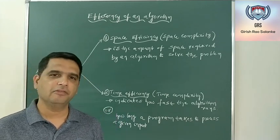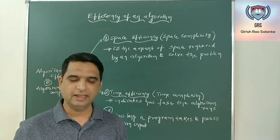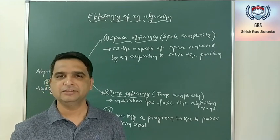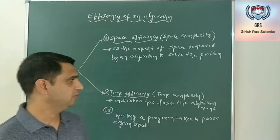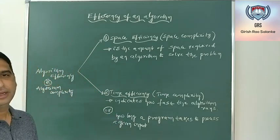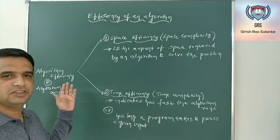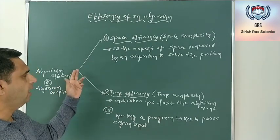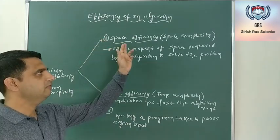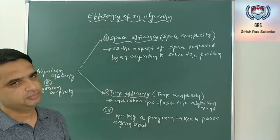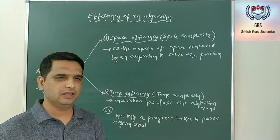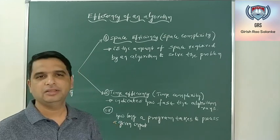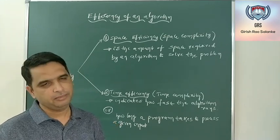Note that the complexity of any algorithm can be classified as time complexity as well as space complexity. The efficiency of an algorithm or algorithm complexity is of two different types: the first is space efficiency, also called space complexity, and the second is time complexity or time efficiency.